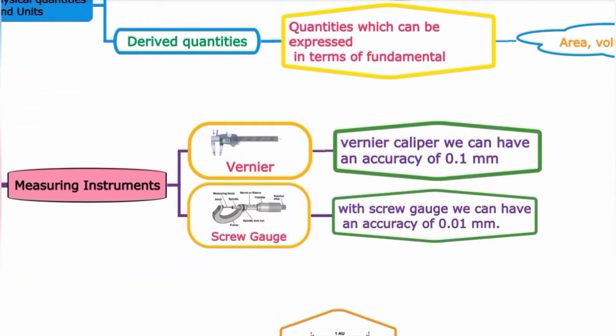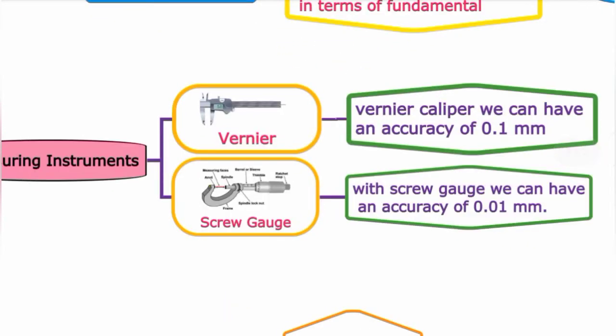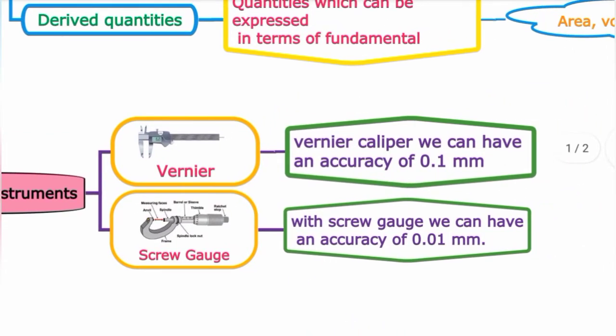Next, measuring instruments. We have two main instruments: Vernier Caliper and Screw Gauge. Vernier Caliper is used to measure the length of objects and has an accuracy of 0.1 mm.